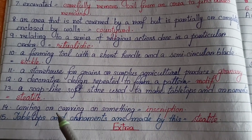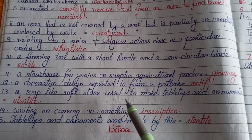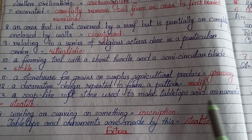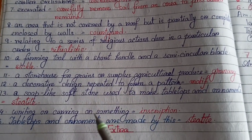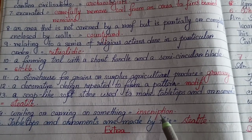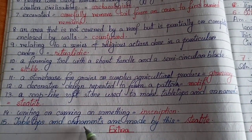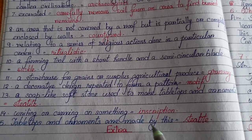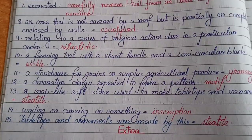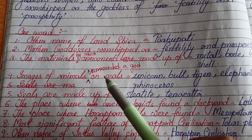Number twelve: A decorative design repeated to form a pattern — motif. Number thirteen: A soapstone used to make seals or ornaments — steatite. Number fourteen: Writing or carving on something — inscription. Number fifteen: The material used to make table tops or ornaments — steatite.